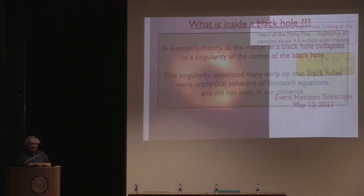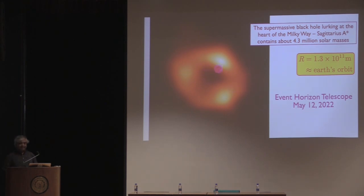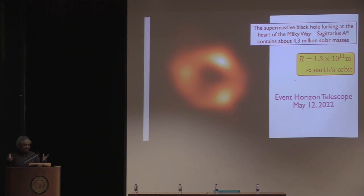Today, black holes are everywhere. There's a black hole at the center of the Milky Way — a supermassive black hole containing about 4.3 billion solar masses, so its Schwarzschild radius is about the size of the Earth's orbit around the Sun. This is a picture from the Event Horizon Telescope just recently, showing this black hole. It's not just at the center of the Milky Way — the center of every galaxy seems to have a supermassive black hole. There are also many smaller black holes detected by LIGO telescopes, with one coming to India soon. They're very much part of the universe.